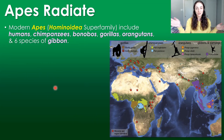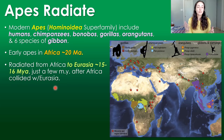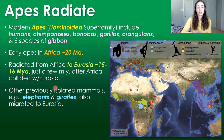Now for the radiation of apes and human evolution. The superfamily of apes, Hominoidea, includes modern humans, chimpanzees, bonobos, gorillas, orangutans, and six species of gibbon. The first apes evolved from monkeys in Africa around 20 million years ago, then radiated and spread from Africa to Eurasia around 15 to 16 million years ago — just a few million years after Africa collided with Eurasia. Along with apes, previously isolated mammals like elephants and giraffes were also able to migrate to Eurasia once the continents collided.